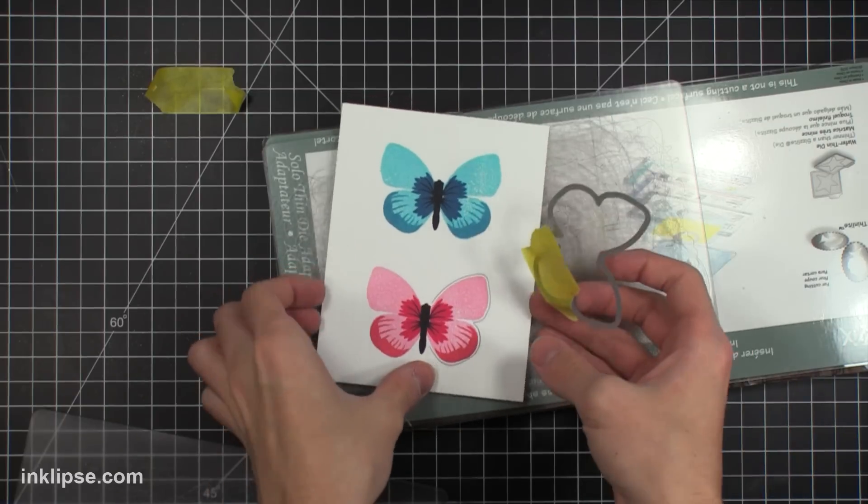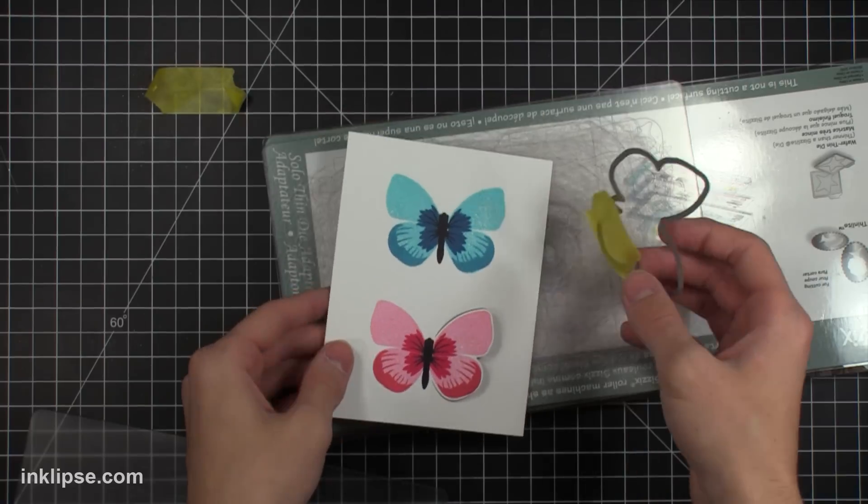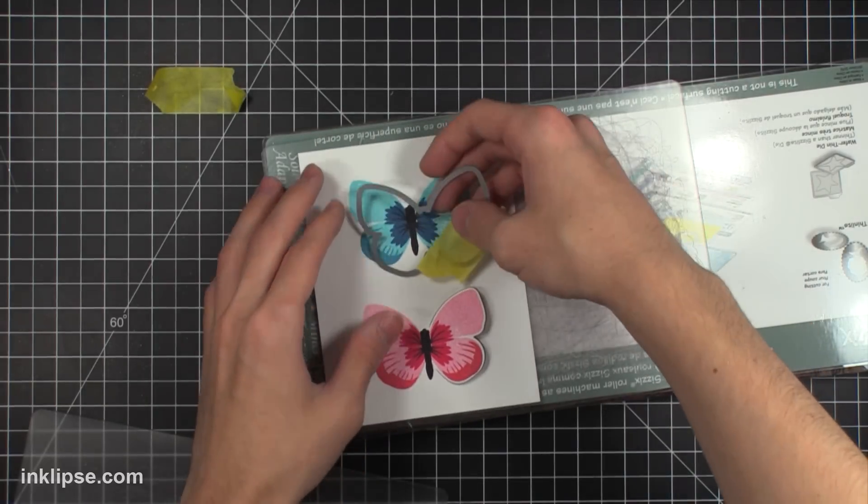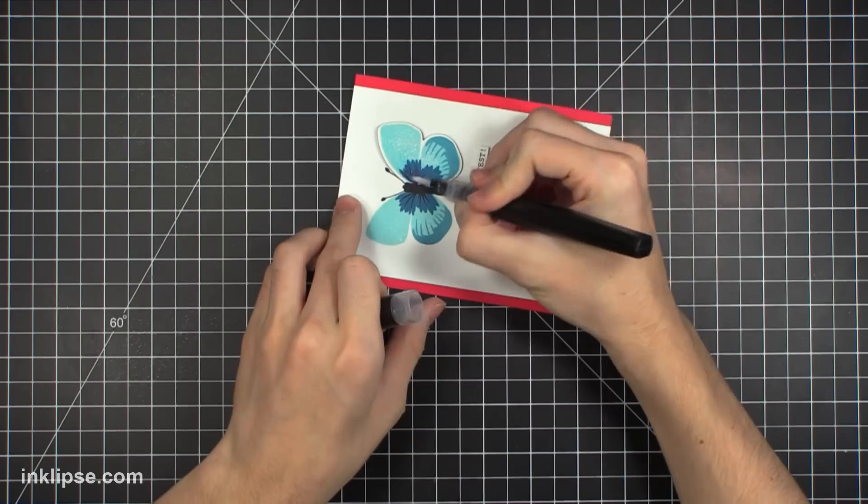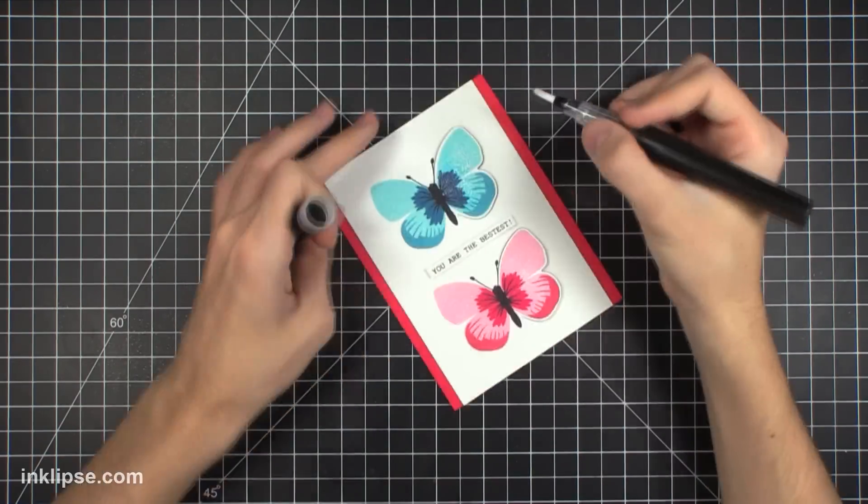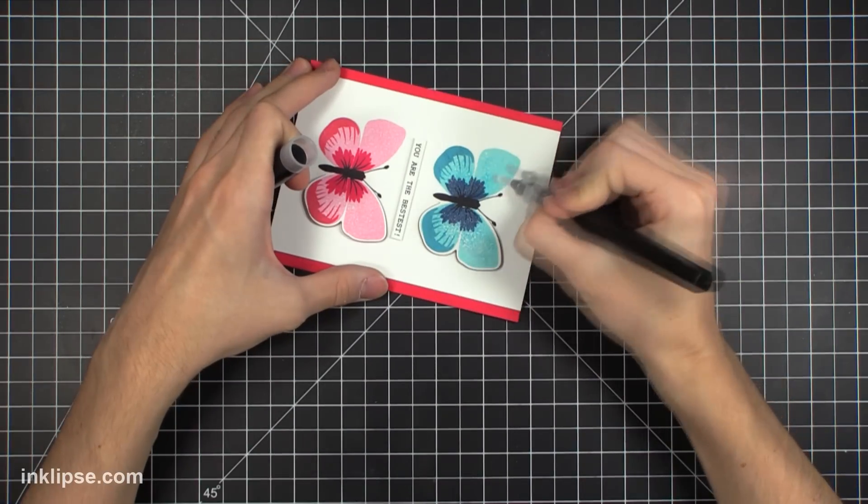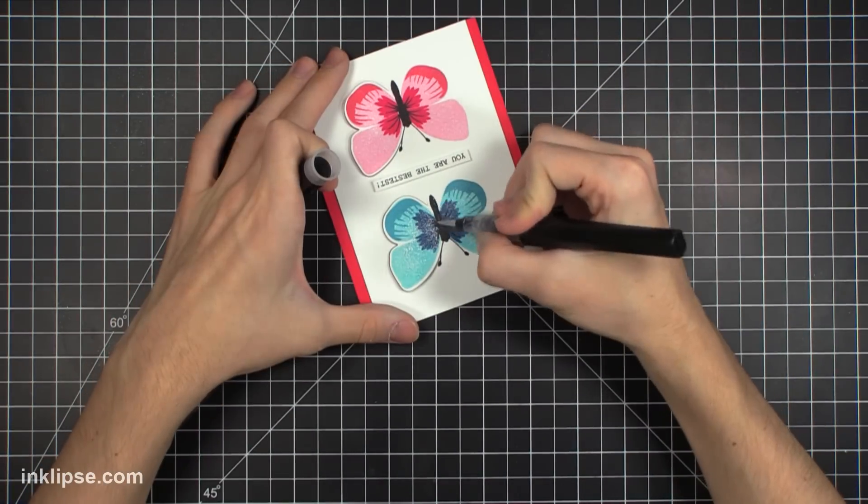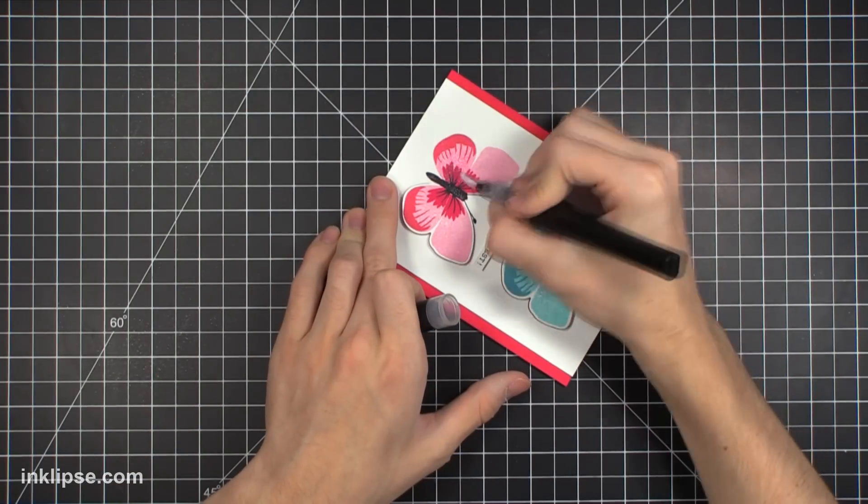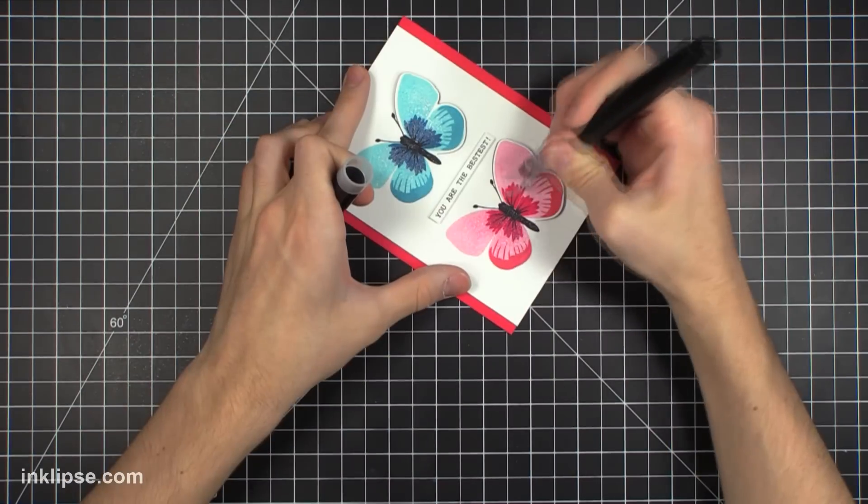So all I'm going to do is just peel that die right up and you'll see how this one wing just comes up and I'm going to do the same with the other butterfly right above it. So I just added a piece of foam tape underneath each wing to make sure it stayed up, added a sentiment, put it onto a colorful card base and then I added some Wink of Stella shimmer which won't rub off onto your hands once you're finished and that kind of completes the whole card.